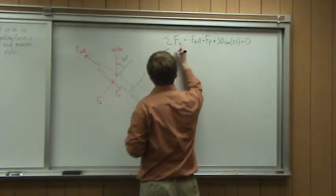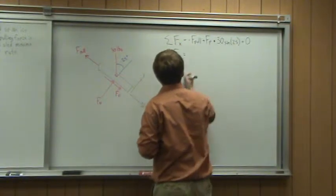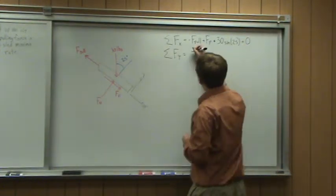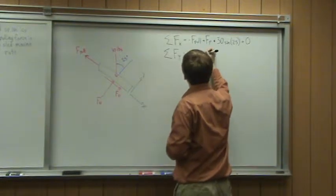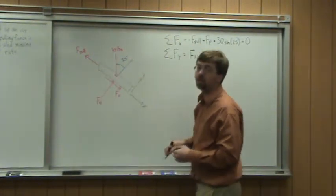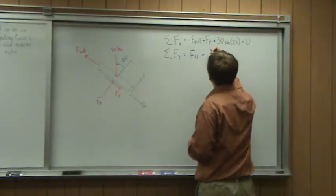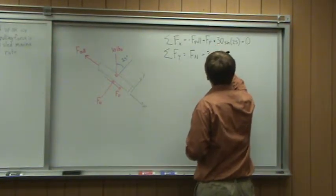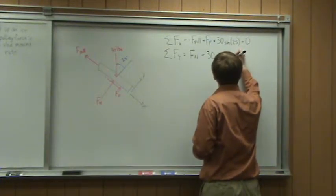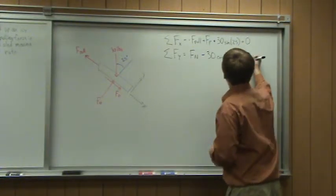Sum of forces in the y is going to be equal to the normal force, Fn, minus the y component of my 30-pound force, minus 30 times the cosine of 25. That's equal to zero.